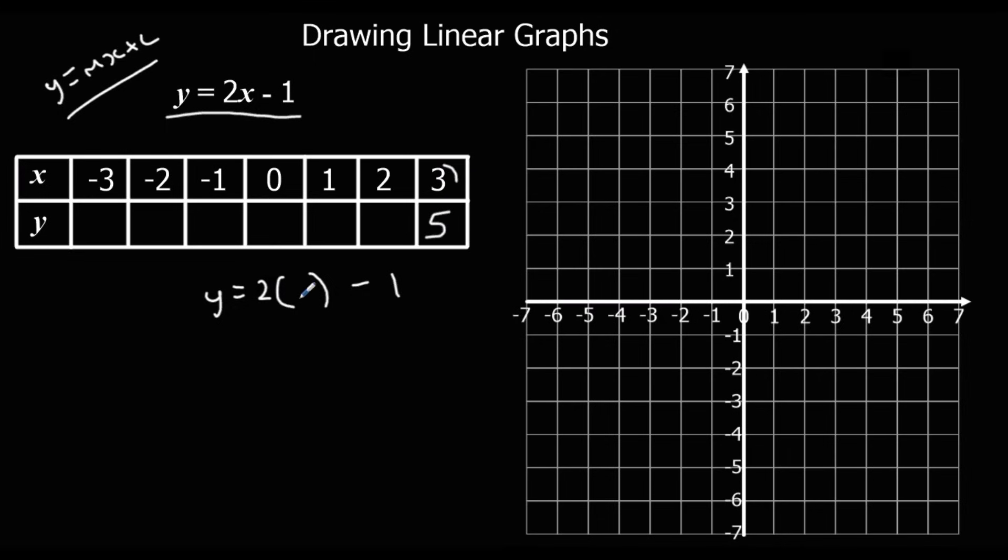2 times 2 is 4 take away 1, 3. 2 times 1 take away 1 is 1. 2 times nothing, 0 minus 1 is minus 1. You can see the pattern emerging already. It's going up in 2's. So we could carry on with the pattern going backwards.